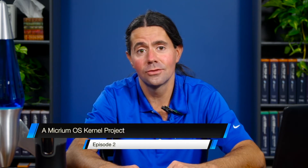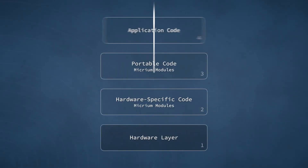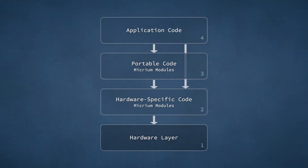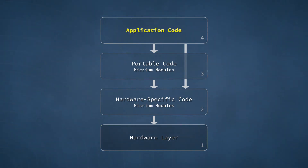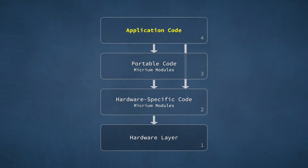Before we start digging into any multitask application code, let's take a look at the structure of a project that incorporates the Micrim OS kernel. As shown here, the Micrim OS project structure has four layers. The fourth layer, at the top, contains your own application's code. In most Micrim OS-based projects, this code would consist of a number of different tasks and would make use of a variety of kernel services.